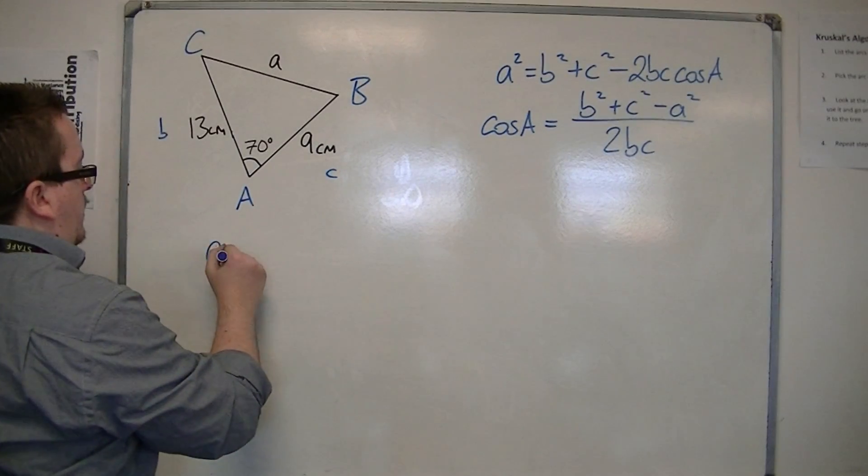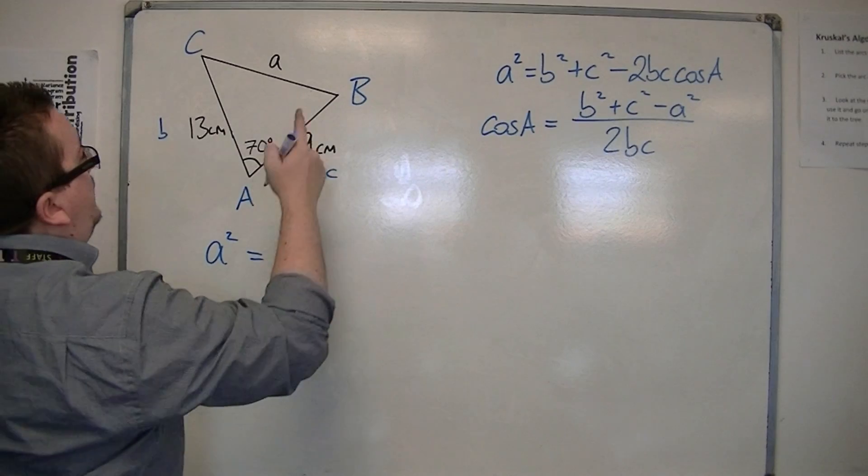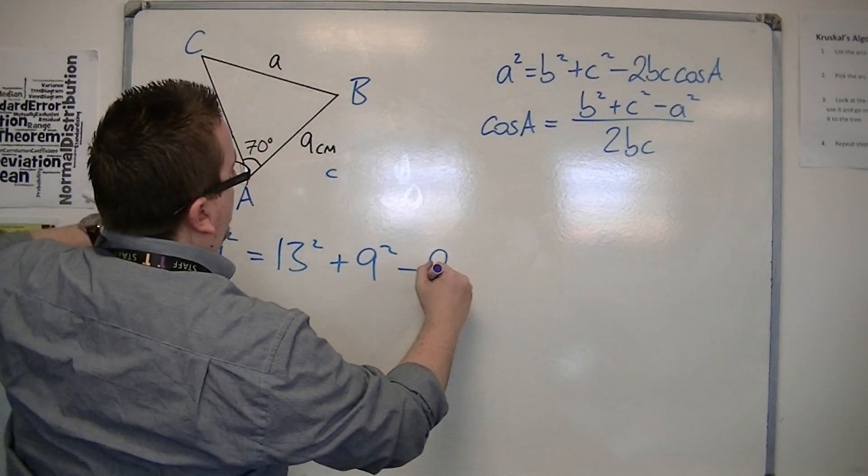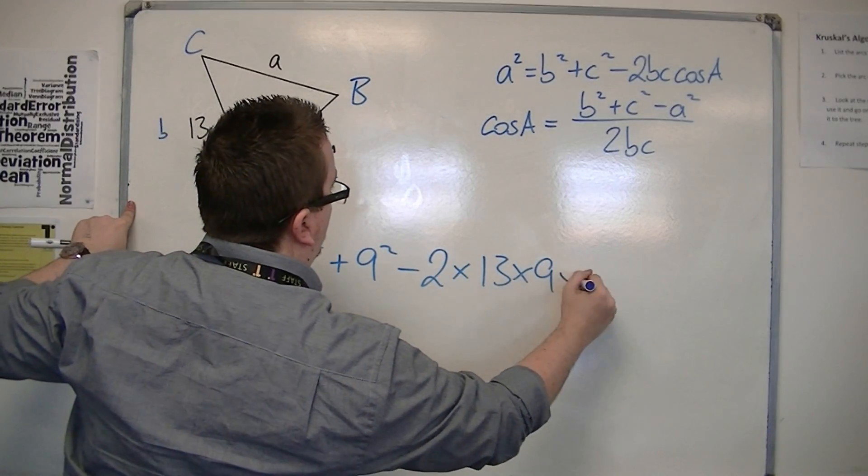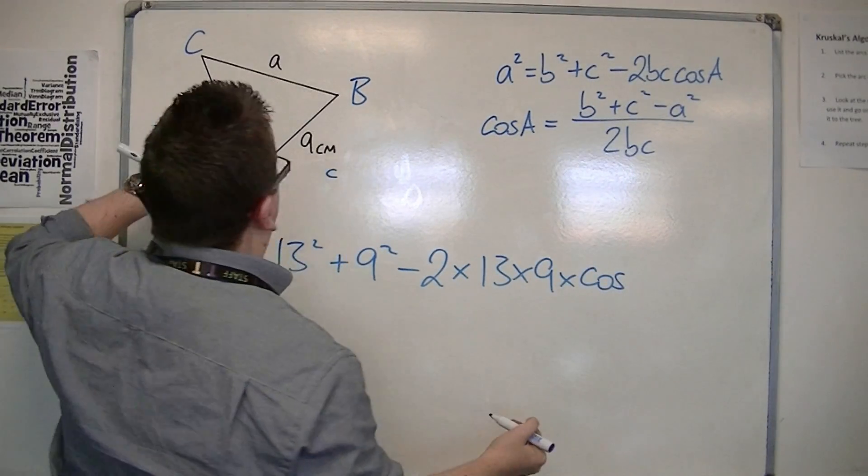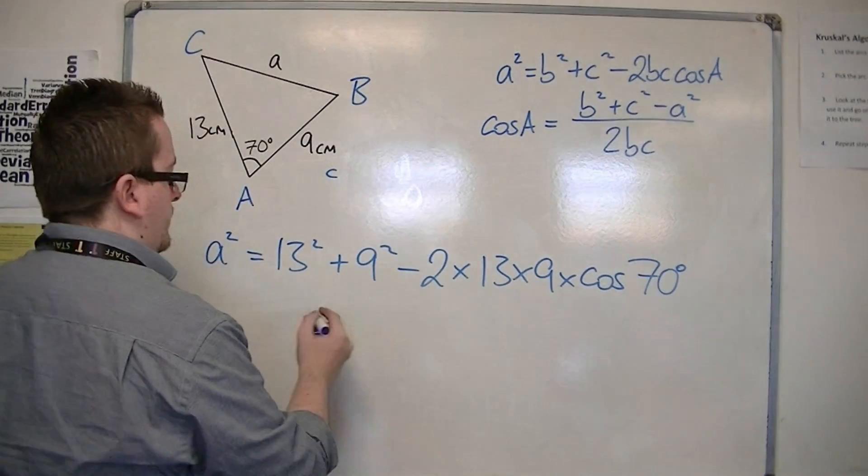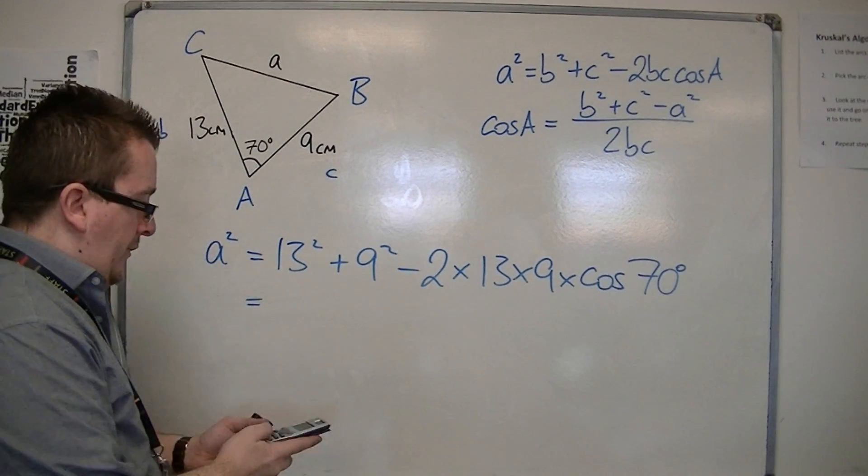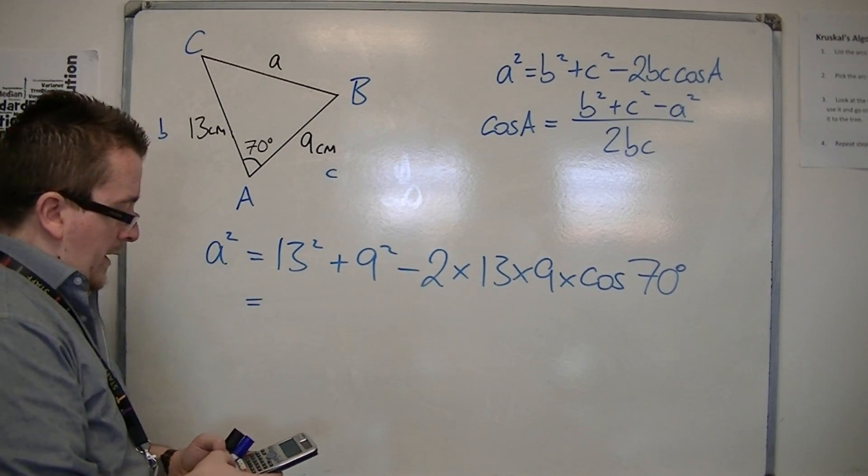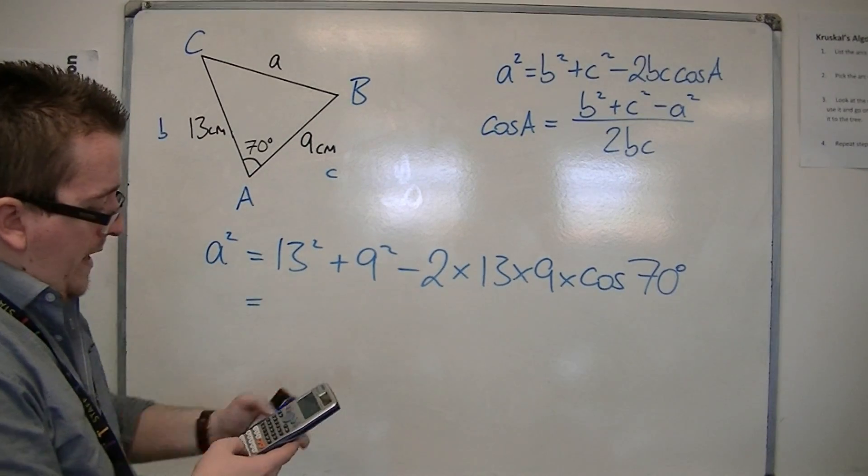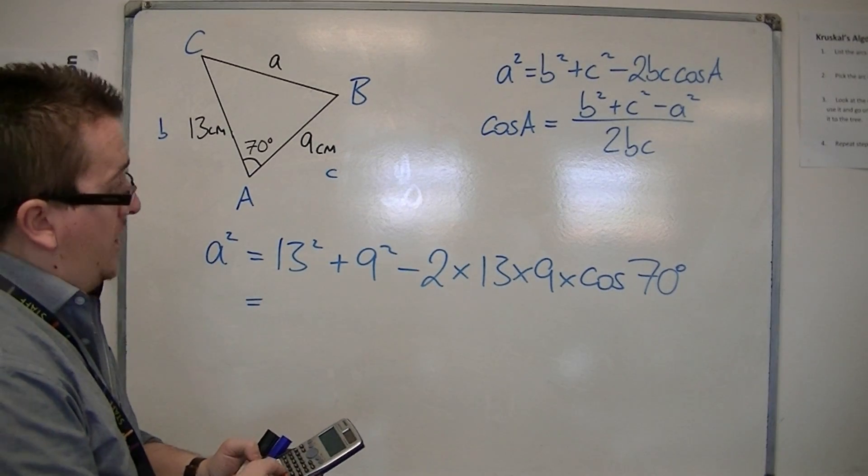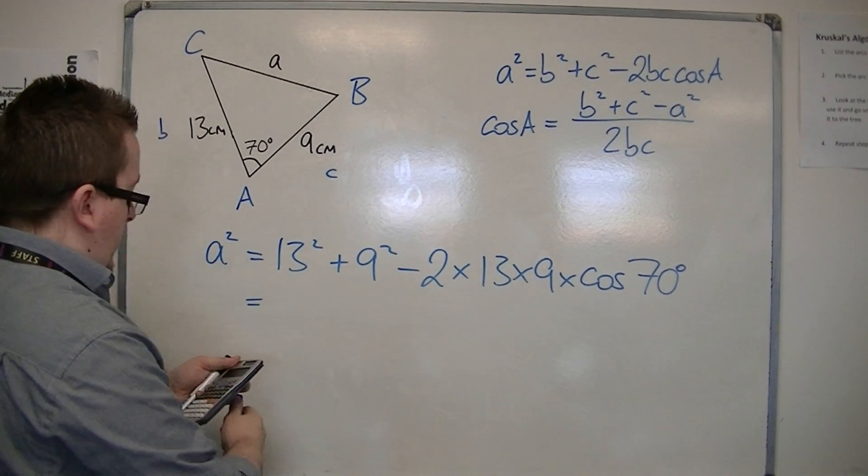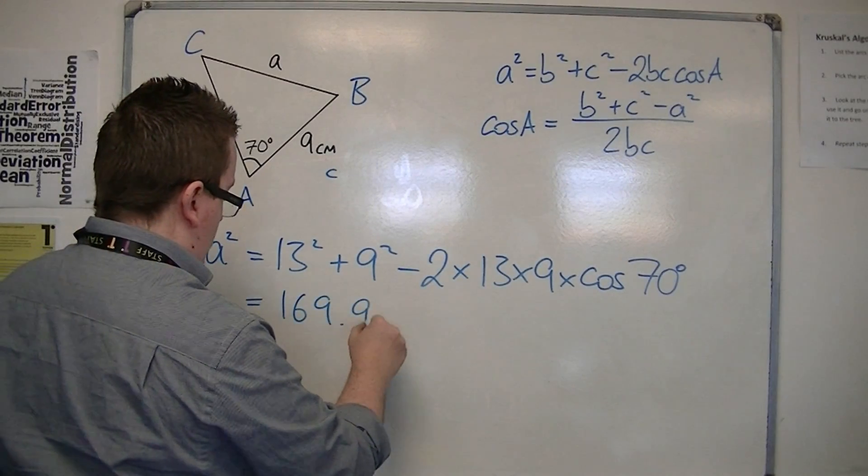So a squared is equal to b squared plus c squared minus 2bc cos of A. So 13 squared plus 9 squared take away 2 times 13 times 9 times cos 70. I'm putting it straight in the calculator in one go, and that's 169.96.